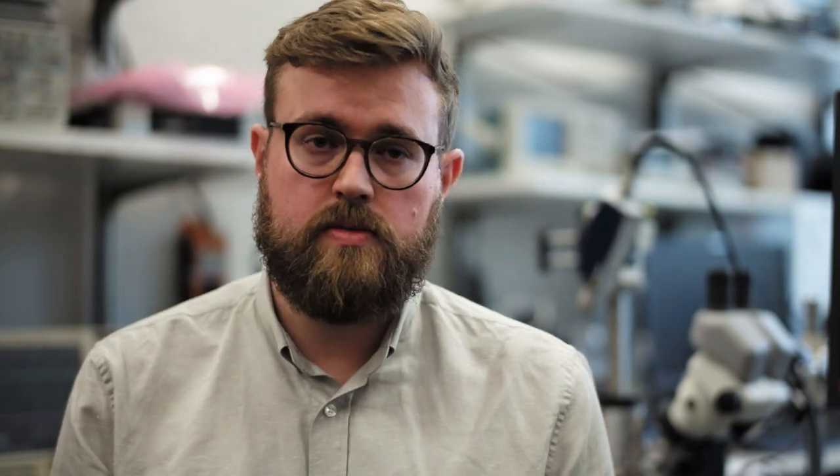The three main new innovations in Snap Machine Learning are new algorithms designed to run on GPUs, efficient use of sparse data structures, and the ability to scale out to many nodes while keeping communication at a minimum.